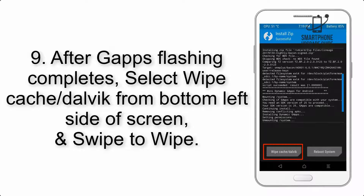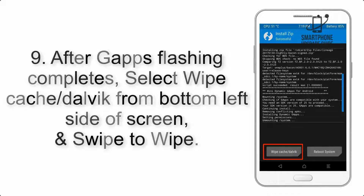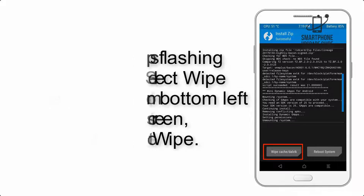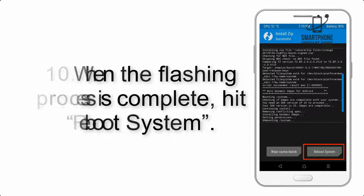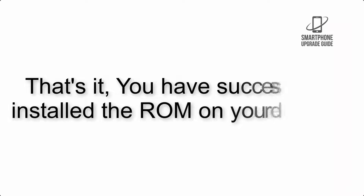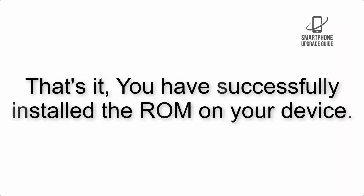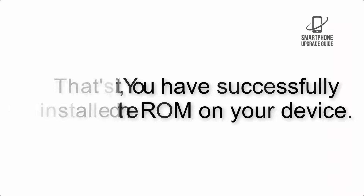Step 9: After gapps flashing completes, select Wipe Cache and Dalvik from the bottom left side of the screen and swipe to wipe. Step 10: When the flashing process is complete, hit Reboot System. That's it — you have successfully installed the ROM on your device.